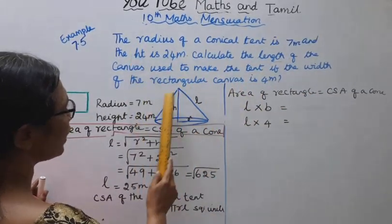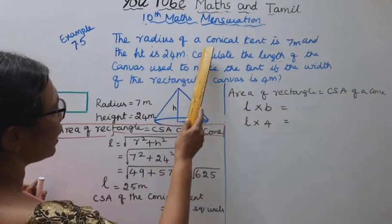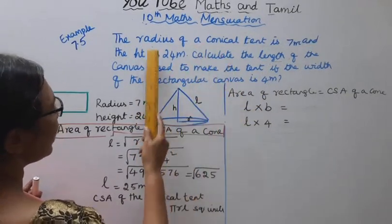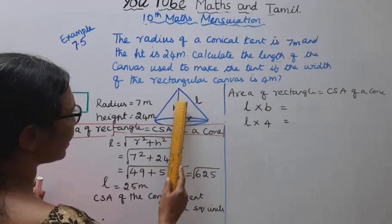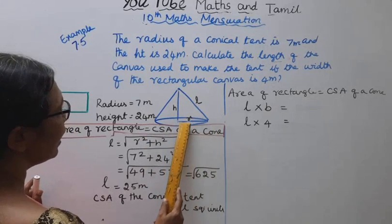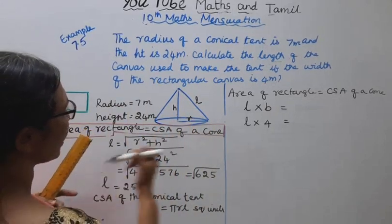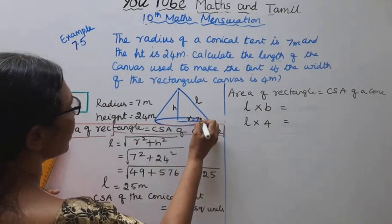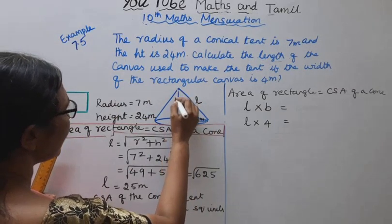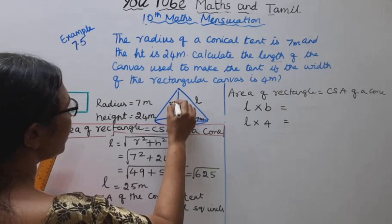For this conical tent, this is the radius, this is the vertical height, and this is the slant height. The radius is 7 meters and the height is 24 meters.